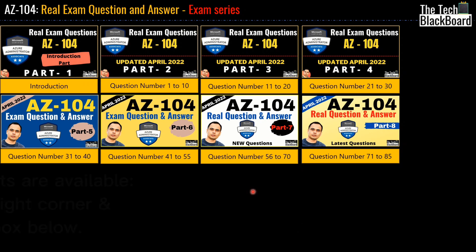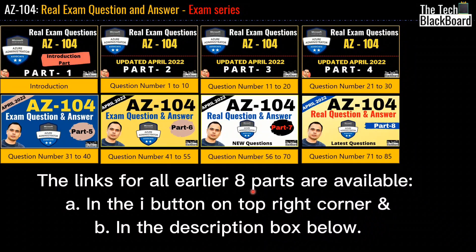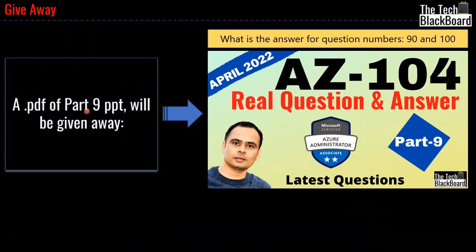If for any reason you have missed watching any of these parts, the links for all these parts are appearing in the i-button on the top right corner and are also available in the description box below. If you want a PDF version of all the questions with answers for part 9, you have to give me the correct answer for question number 90 and question number 100. You will find the answers to both these questions in this video itself. A PDF file can really boost your learning in offline mode as well, so please watch the video very carefully till the very end.